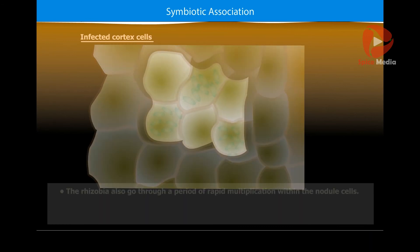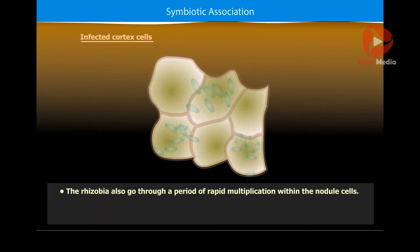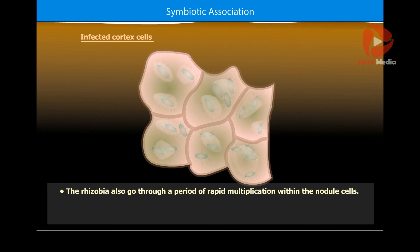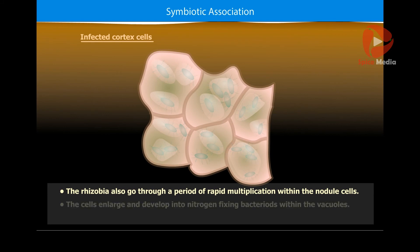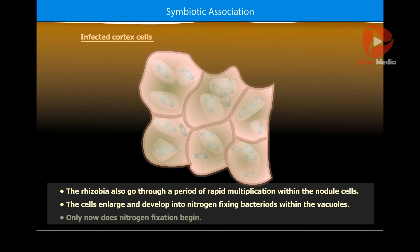The rhizobia also go through a period of rapid multiplication within the nodule cells. Then the cells enlarge and develop into nitrogen-fixing bacteria within the vacuoles. Only now does nitrogen fixation begin.